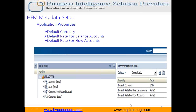In order to perform currency conversion in HFM we need to set the application properties under HFM metadata setup. There are three properties we need to set: default currency, currency exchange rate for flow account, and currency exchange rate for balance account. There are different currency exchange rates for all accounts of balance type and all accounts of flow type, so we need to define the currency exchange rate in addition to the default currency.